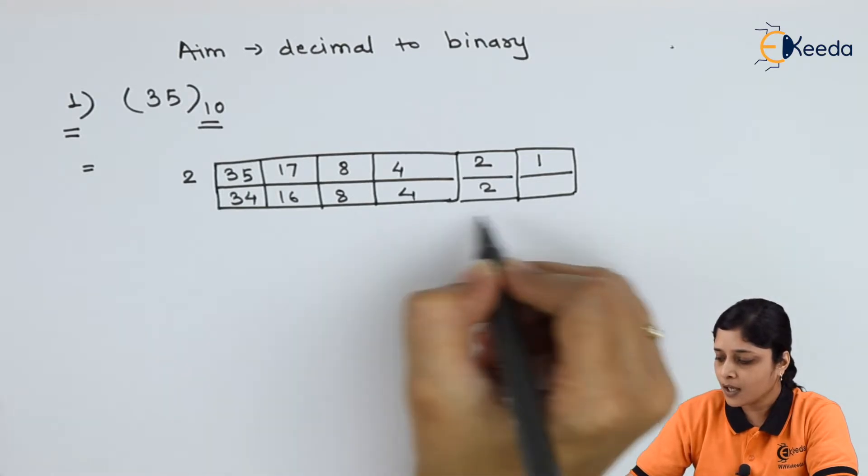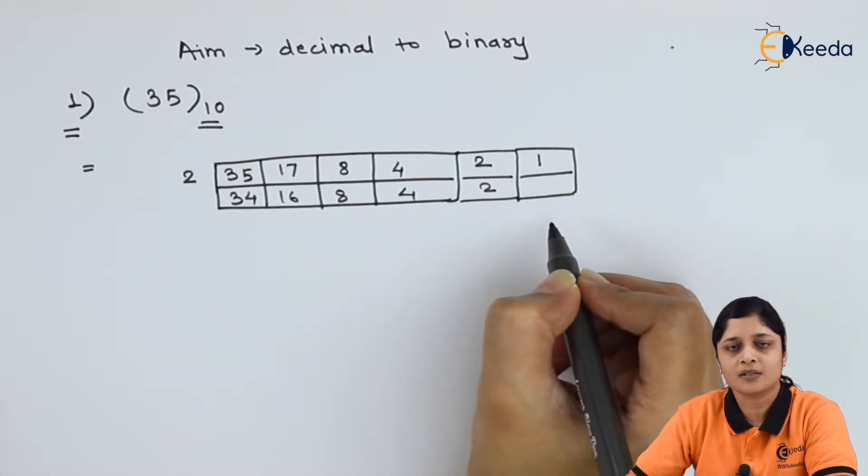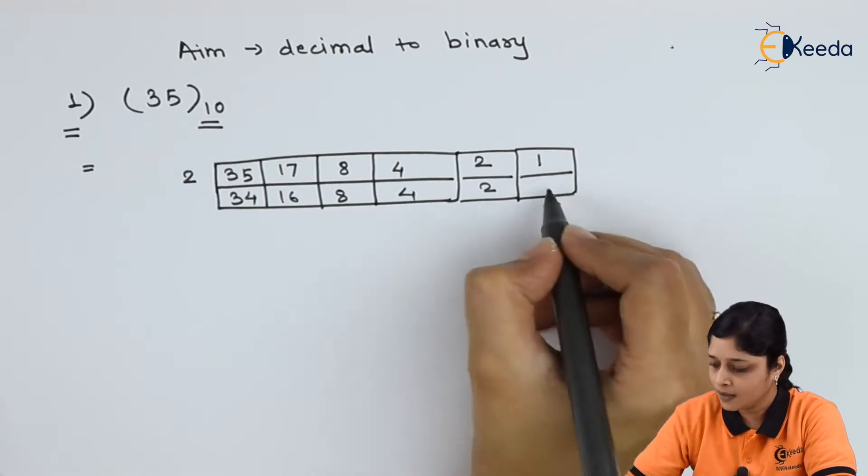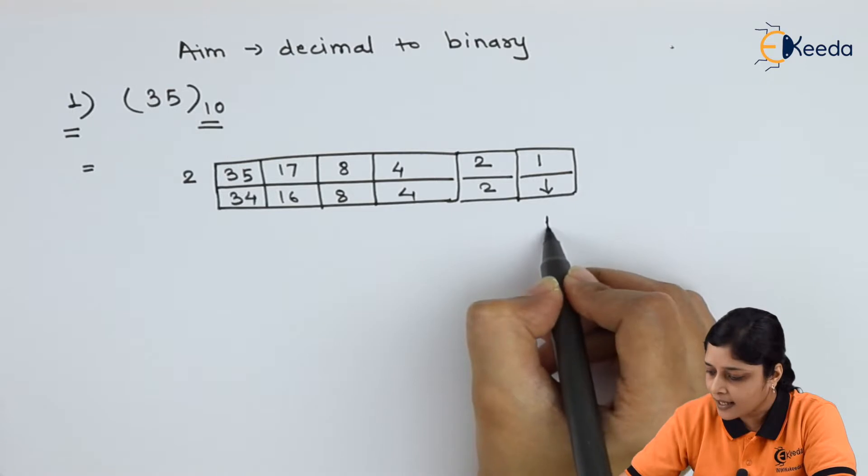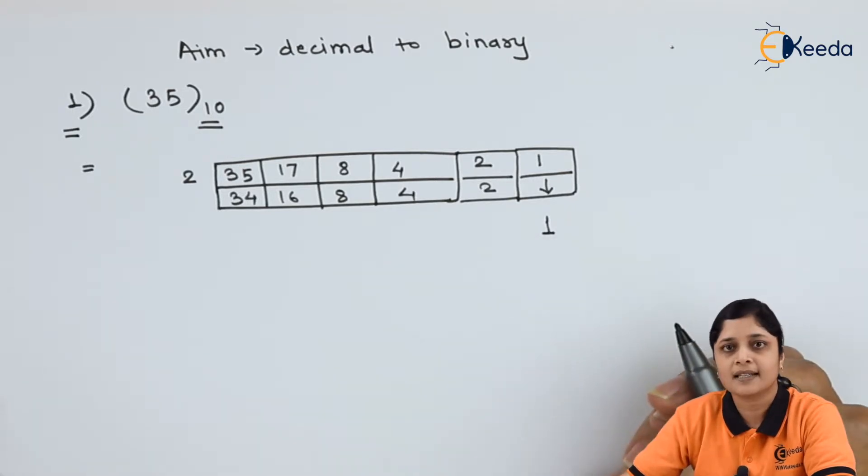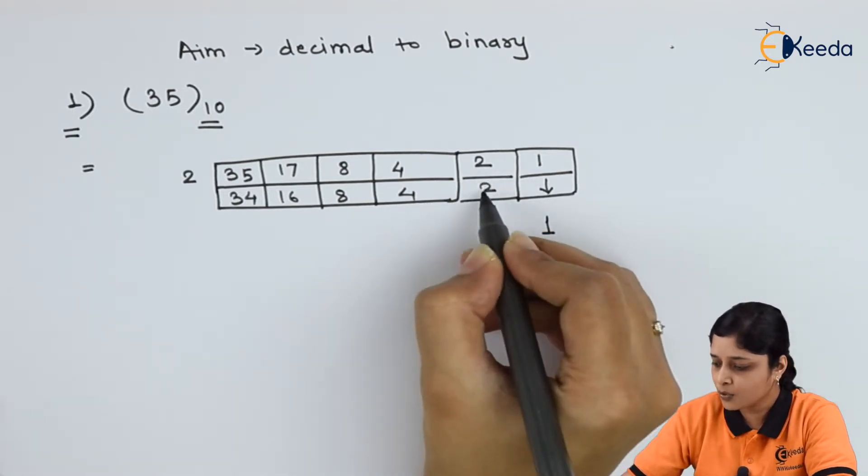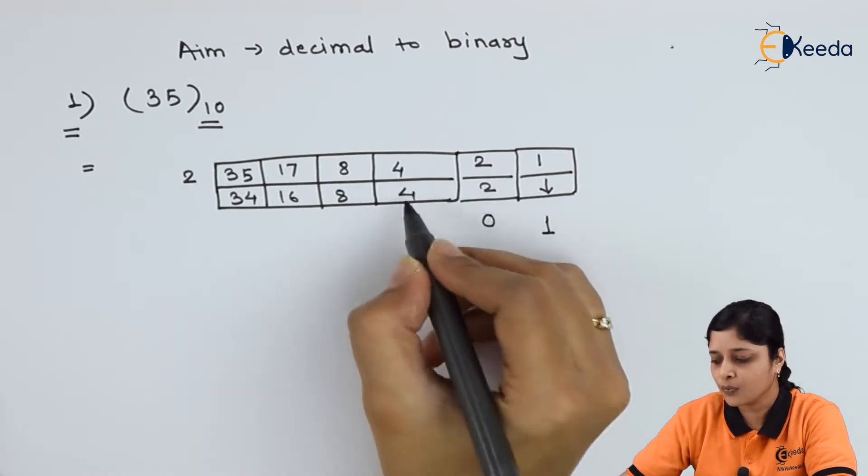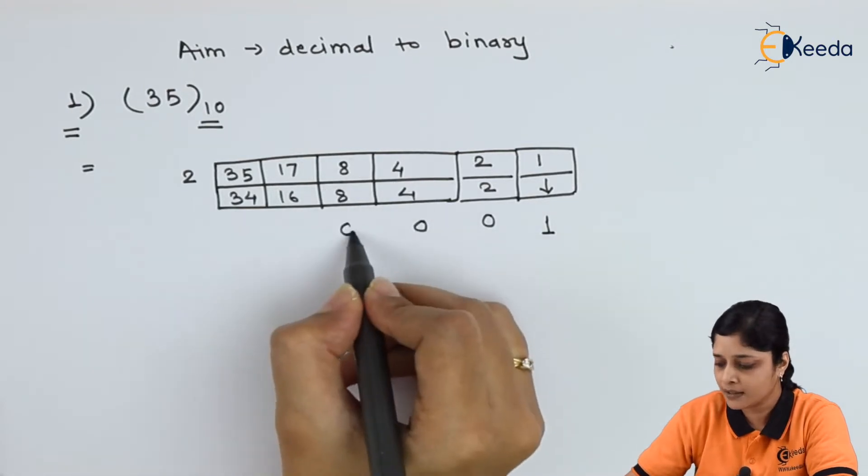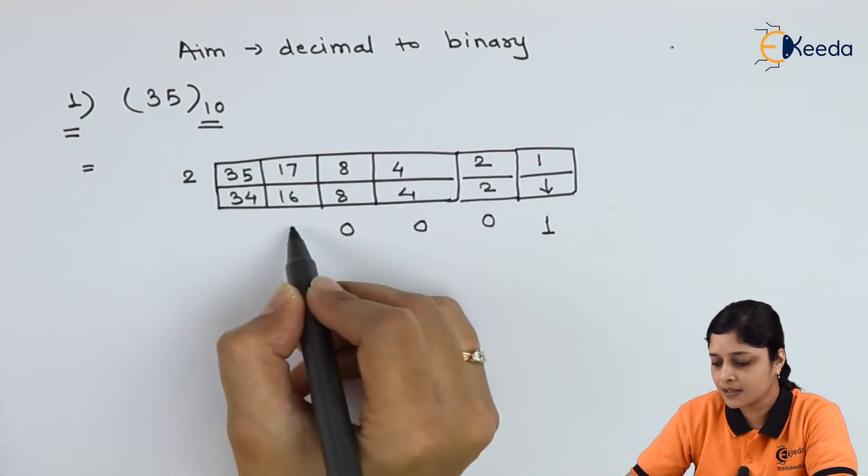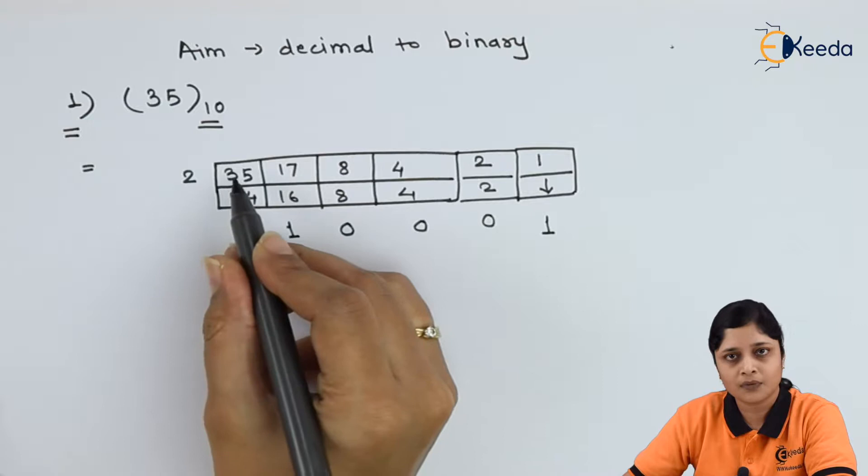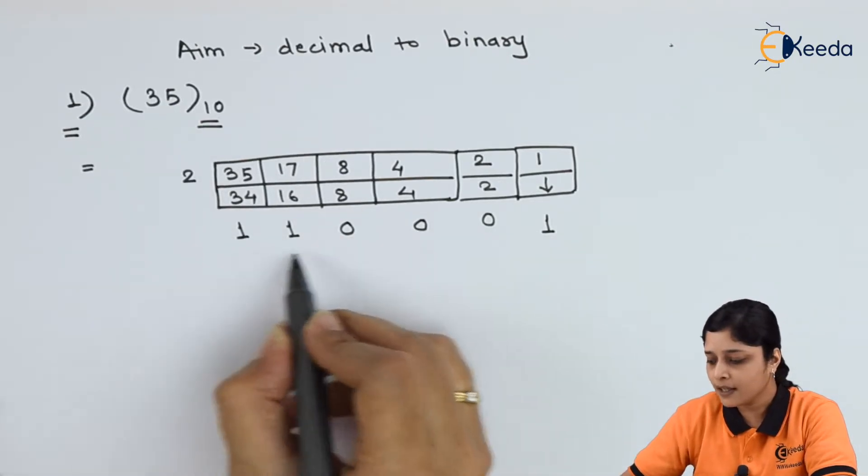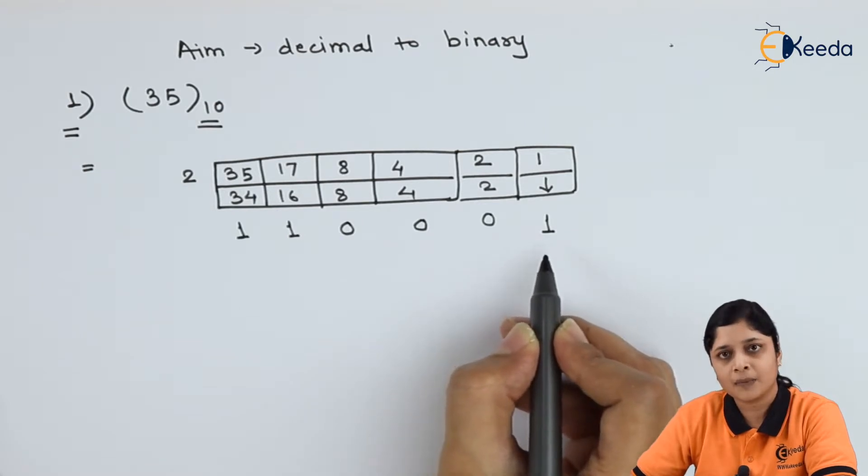Up to this point you have to do successive division method. Now how to write answer. You have to write 1 as it is. Last 1 as it is. Then, if 2 and 2 is there then write 0, 4 4 0, 8 8 0, 17 minus 16 1, 35 minus 34 difference is 1. Here you have written binary numbers.